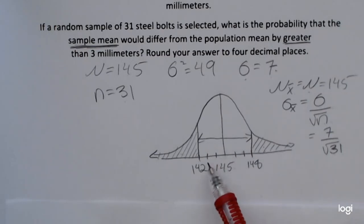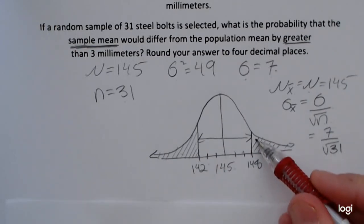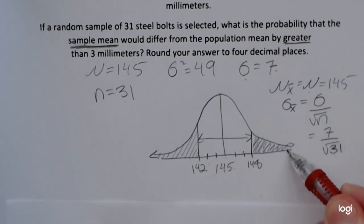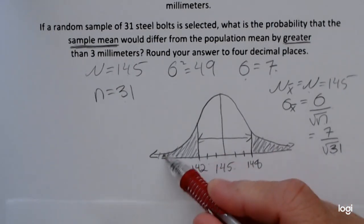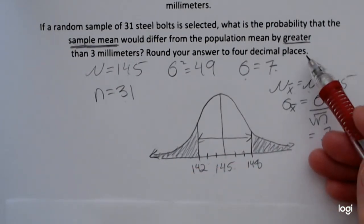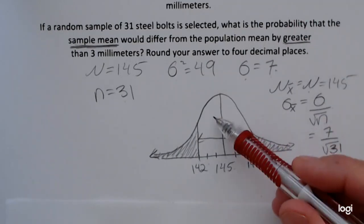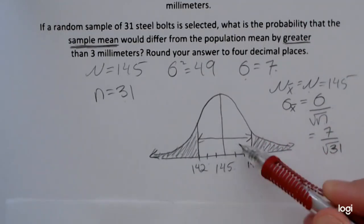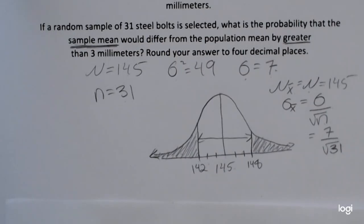Now because they want that difference to be greater, then they want the two shaded areas for the tails. If they said less than 3 millimeters, they would want the in-between case. But since they want that difference to be greater than 3 on either side, I'm shading these tails.